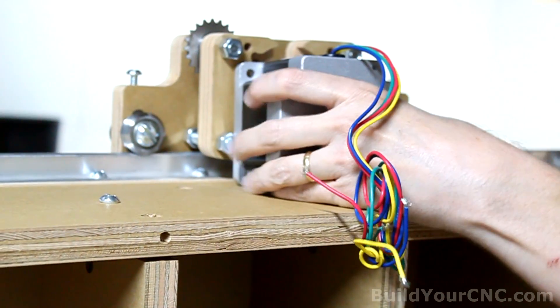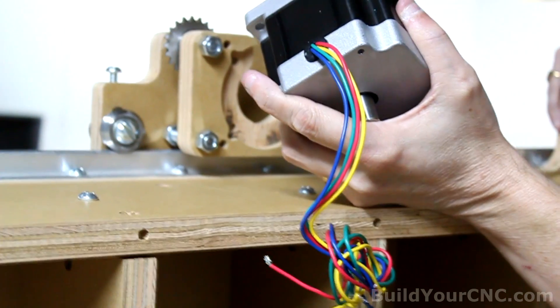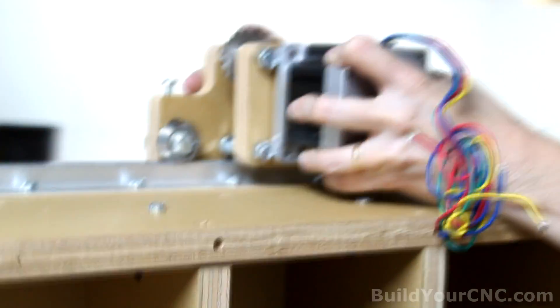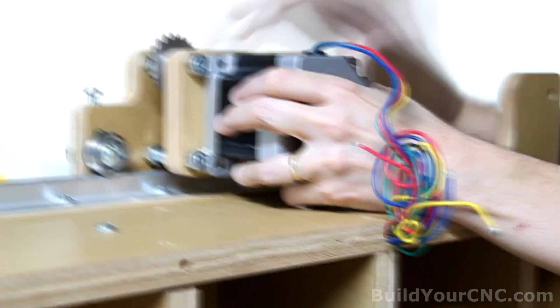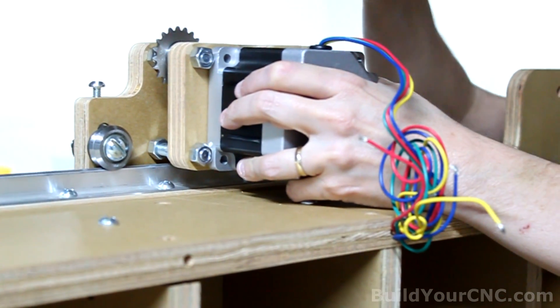Now we can put the motor on. We're going to take the Y-axis motor and position it right on the motor mount. We'll be using 3 of these 1-inch screws.